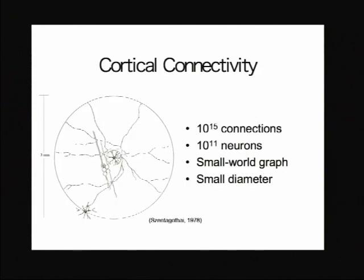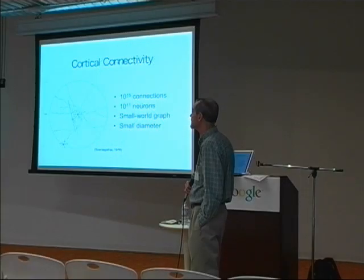We're talking about the cortex, not graphs on a blackboard. The connectivity in the cortex is of a relatively benign sort — on the order of 10^11 neurons but only 10^15 connections, usually referred to as a very sparse graph with small-world properties. Essentially, the distance between any two neurons is relatively short because of a blend of short-range and long-range connections. This kind of connectivity is rapidly becoming possible to model on cluster computers, which is what we'll be talking about.